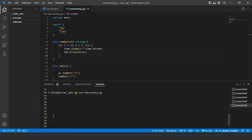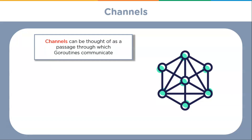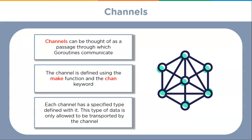Now we are done with the goroutine example. Let's move to channels. Goroutines communicate with other elements through channels. Channels can be thought of as a passage through which goroutines communicate. A channel is defined using the make function and the 'chan' keyword. Each channel has a specified type defined with it — only that type of data is allowed to be transported by the channel. The zero value of a channel is nil and channels are not of any use until defined. Channels are designed to prevent race conditions when accessing shared memory using goroutines.